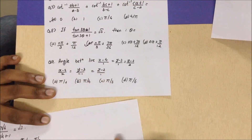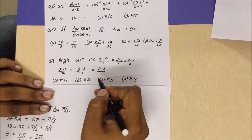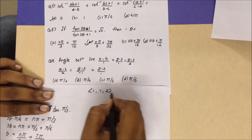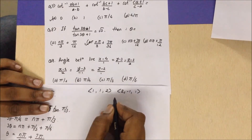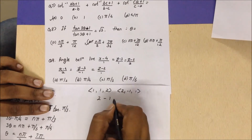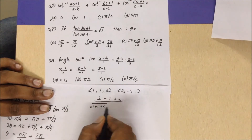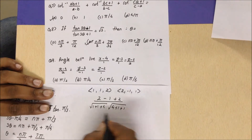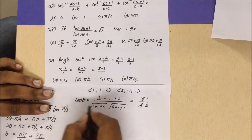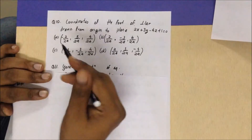Next: find the angle between two lines whose directional ratios are (1, 1, 2) and (2, −1, 1). The dot product is 1×2 + 1×(−1) + 2×1 = 2 − 1 + 2 = 3. The magnitudes are √(1+1+4) = √6 and √(4+1+1) = √6. So cosθ = 3/6 = 1/2, giving θ = π/3. The answer is option C.